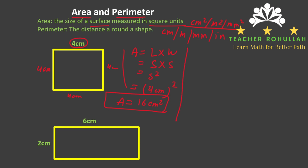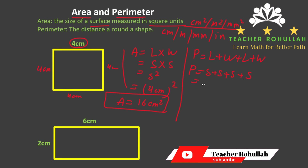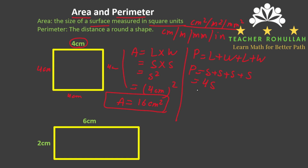To find the perimeter of a shape we use P equals L plus W plus L plus W. For a square we replace L and W with S, giving us S plus S plus S plus S — that's four S. So the perimeter is four times four centimeters, which equals 16 centimeters. The perimeter of this square is 16 centimeters.